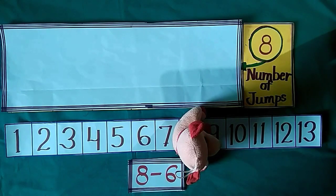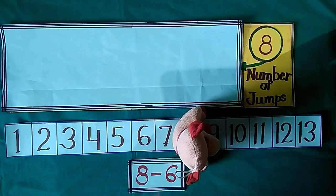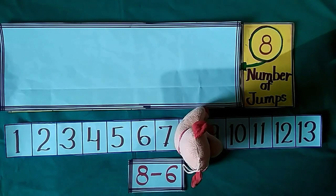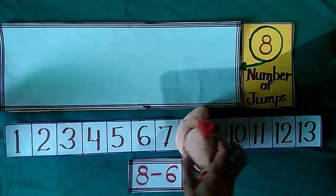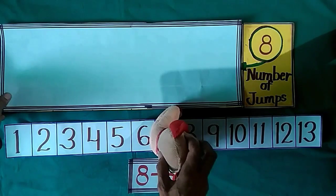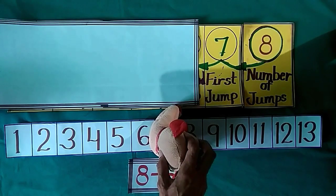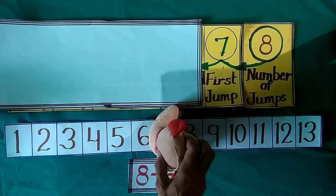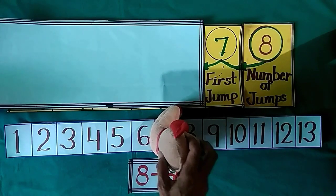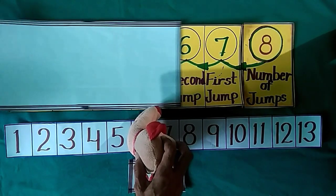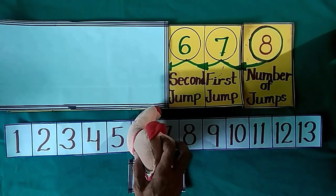He starts backward jumping. Let us see where he reaches after 6 jumps. When Jimmy takes his first jump, he reached at 7. With second jump, he reached at 6.